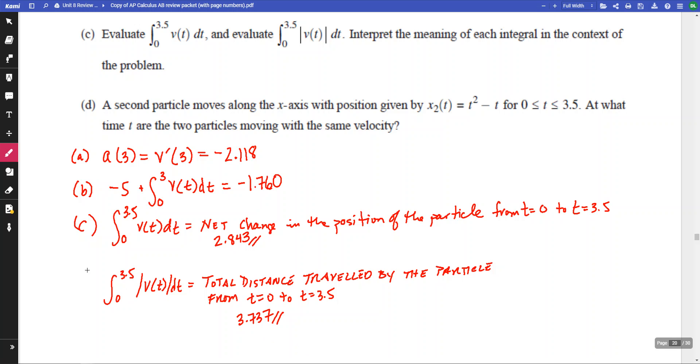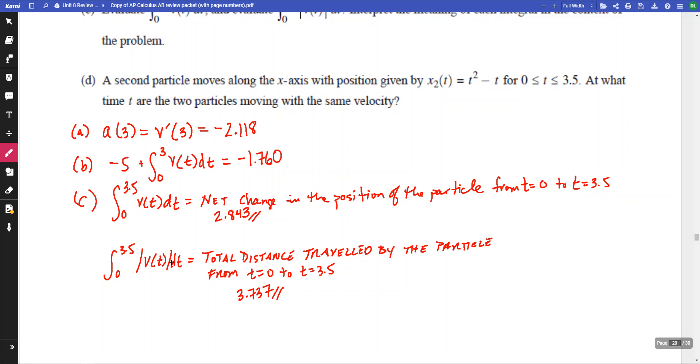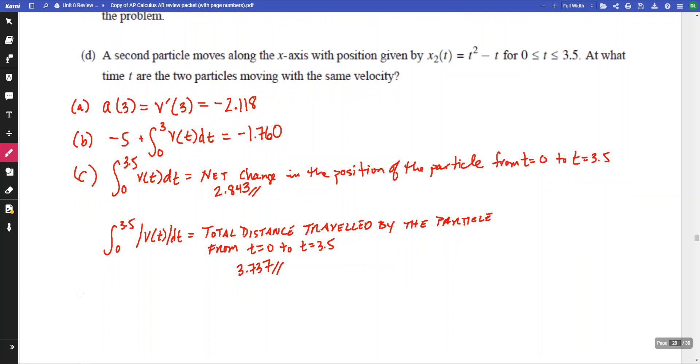If we continue with our work, a second particle moves along the x-axis. At what time are the two particles moving with the same velocity? We need to figure out our information regarding velocity. So for part D, we need the velocity of particle 2 to equal the velocity of particle 1. Because that will be when the particles are moving with the same velocity. Therefore, we need 2t minus 1, the derivative of t squared minus t to be equal to our velocity equation.